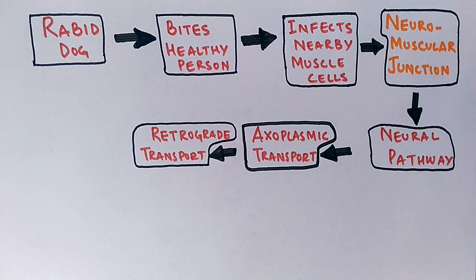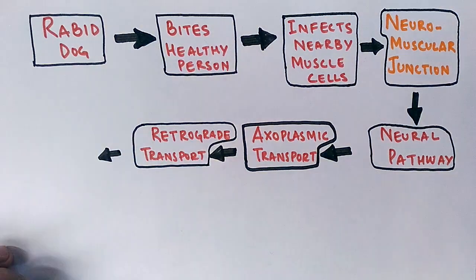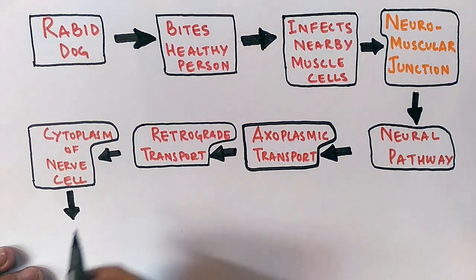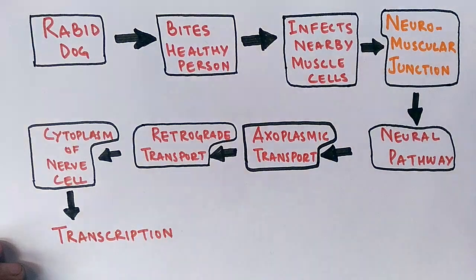It's mediated by motor proteins from the microtubule. After this retrograde transport, the virus gets transported to the cytoplasm of the nerve cell, which is called the body of the nerve cell, and from here transcription of the virus takes place.